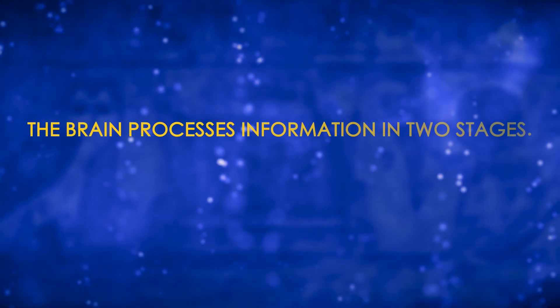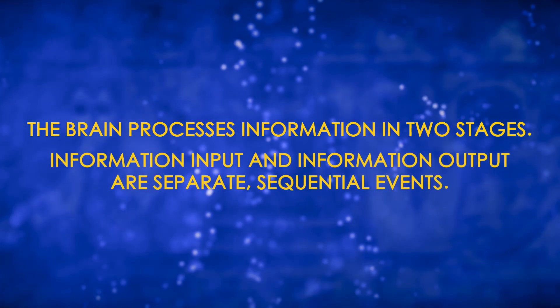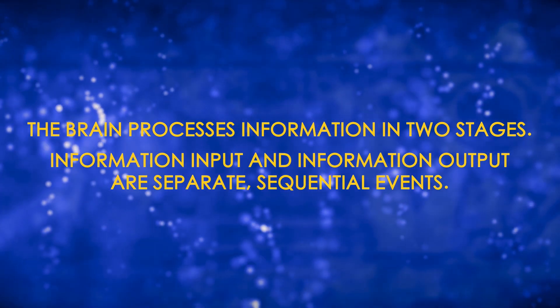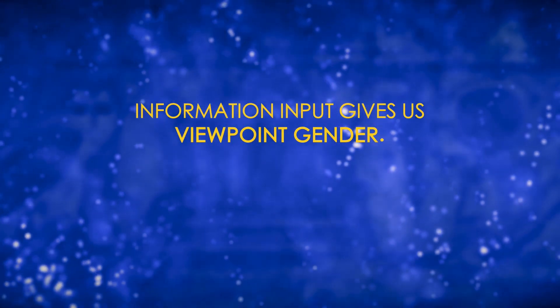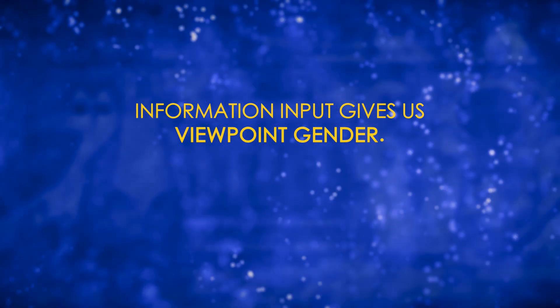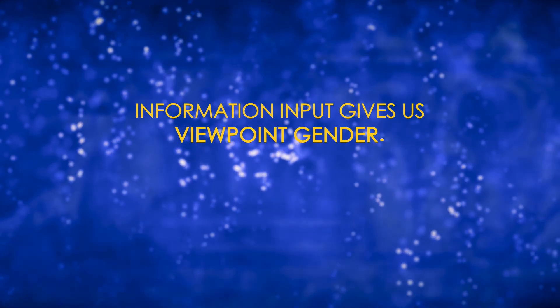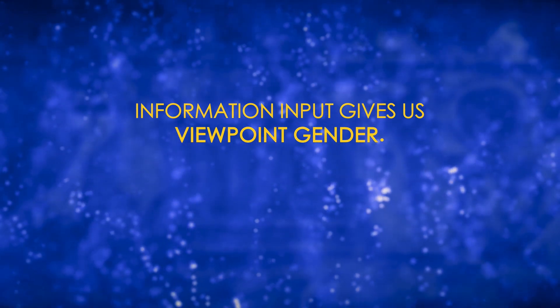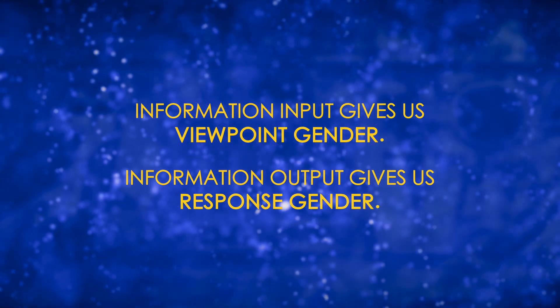Once we understand how the brain can produce four sexual orientations, it's easy to understand how it can produce 16. The brain processes information in two distinct stages: information input and information output are separate sequential events. Information input starts with our viewpoint, so I refer to gender associated with information input as viewpoint gender. Our response to what we see creates an output of information, and I therefore refer to gender associated with information output as response gender.